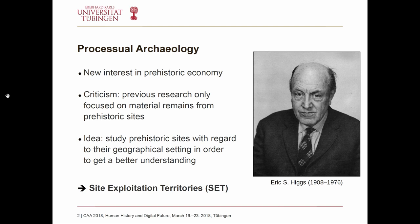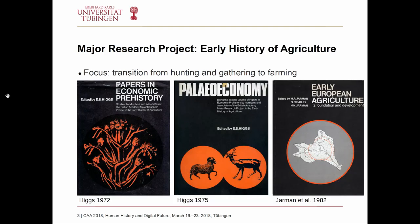At the University of Cambridge, a research group led by Eric Higgs came up with new ideas and concepts enabling archaeologists to overcome this isolated analysis. They suggested that to better understand prehistoric sites we should not only analyze material remains but also consider the geographical setting. These ideas were mainly published in a series of three volumes dealing with the early history of agriculture and the transition from hunting and gathering to farming. The concept of site exploitation territories was used as an analytical approach to discuss these economic issues.